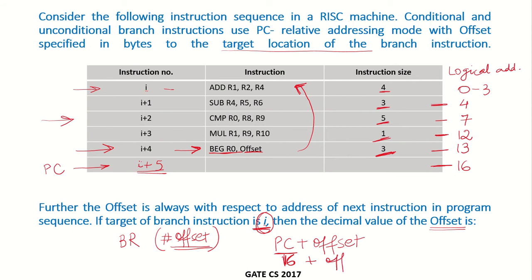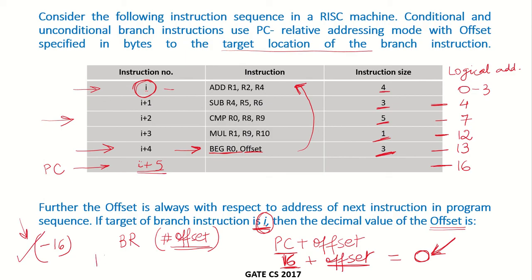And what should be the value of the offset so that we fetch the next instruction from the address of I? The address of I is 0. So whatever value is added to the program counter, it should result in address 0. The program counter is already having a value of 16, so the offset should be minus 16. If minus 16 is one of the options given, then this will be your answer. If the sign is not being considered, then your option would be 16 — this is the decimal value of the offset.